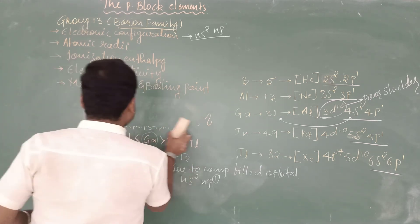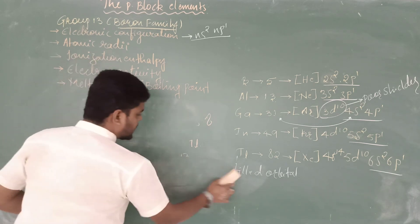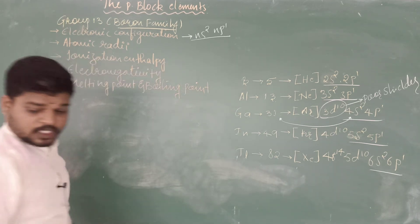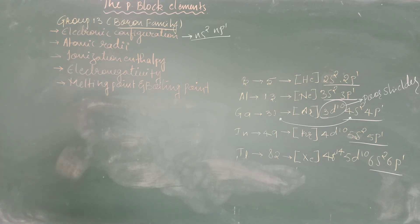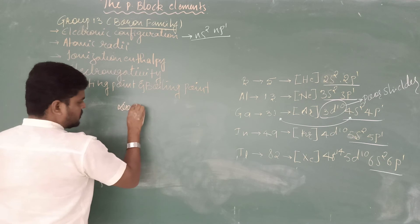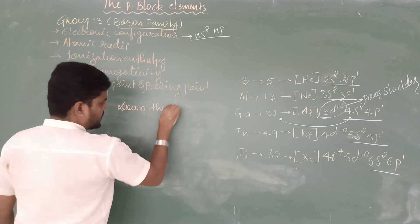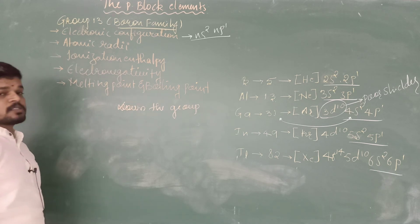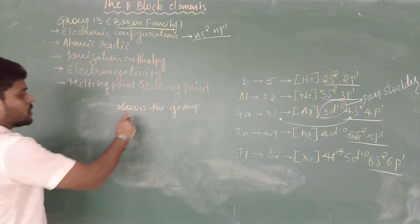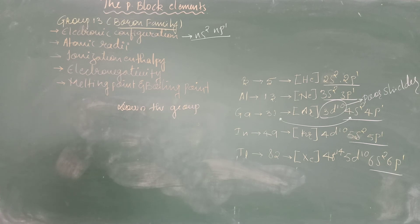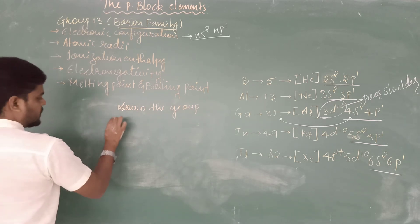The next property is electronegativity. Electronegativity decreases down the group in group 13, and this is due to the increase in the size of the atom as you move down the group.